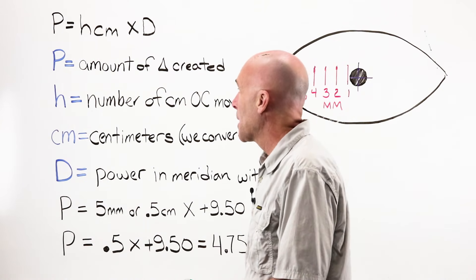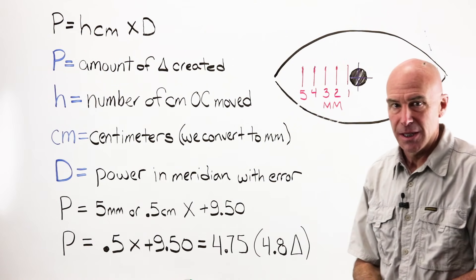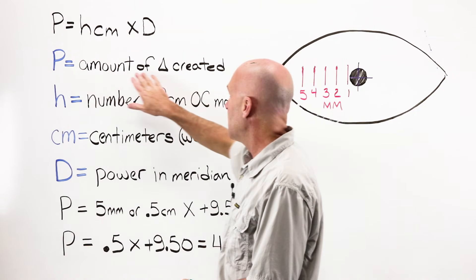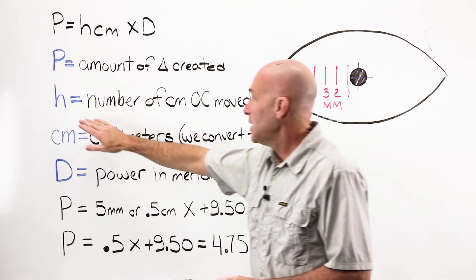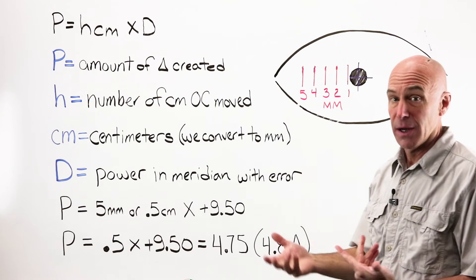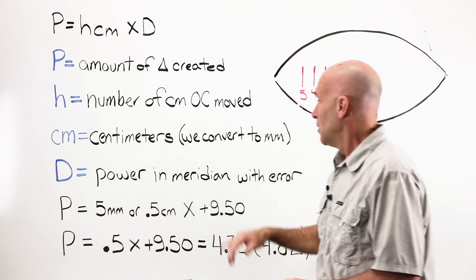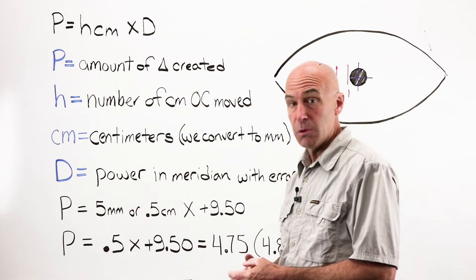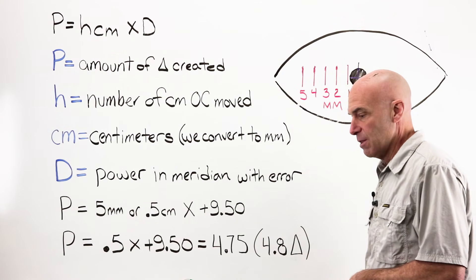Prentice's Formula reads: The prism amount is equal to HCM times D. Not exactly a complicated formula, especially when we break it down. P is equal to the amount of prism created by an error. H is the number of centimeters that our optical center has moved. CM is simply centimeters. We convert to millimeters because that's the measurement that we use. And D is the power in the meridian with the error.